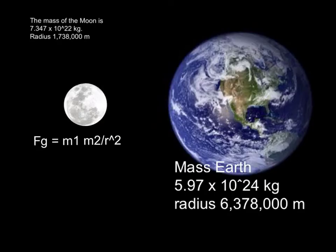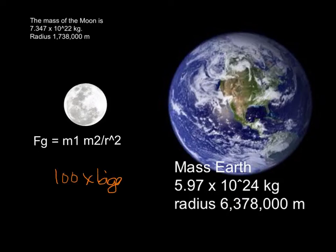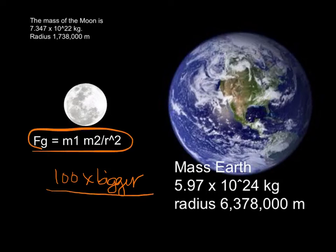So why is gravity less on the Moon than on the Earth? The reason lies in the difference in size between the Earth and the Moon. The Moon has a mass of 7.34 times 10 to the 22nd kilograms, while the Earth has a mass of 5.97 times 10 to the 24th kilograms. If you really look at the exponents, you see that the Earth has a mass about 100 times bigger than the Moon.